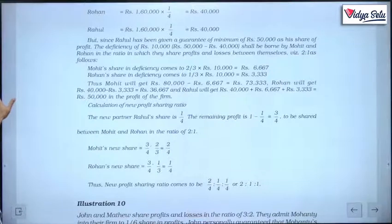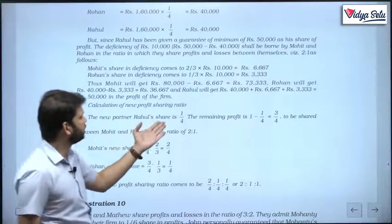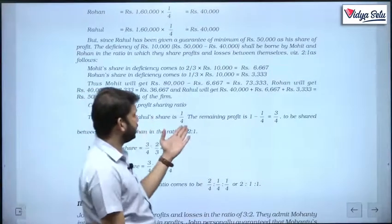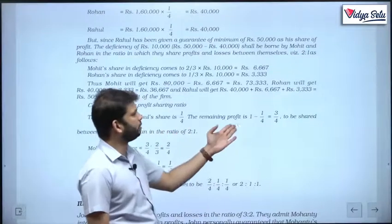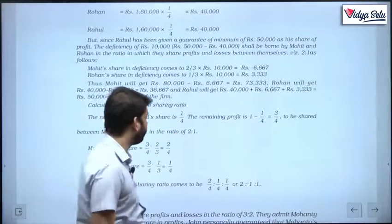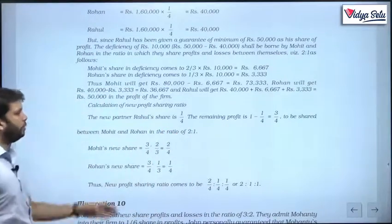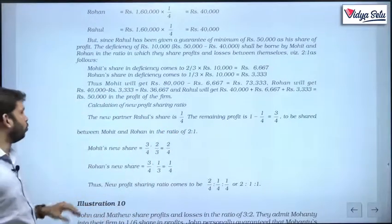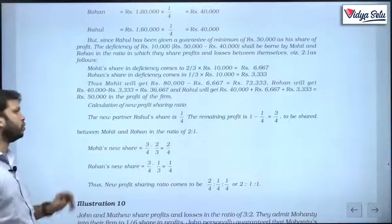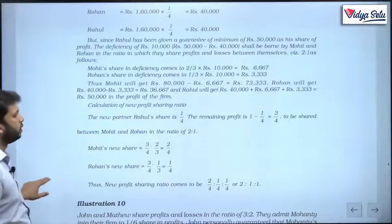As a working note on the calculation of the new profit sharing ratio: the new partner Rahul's share is 1/4, so the remaining is 3/4. This 3/4 will be divided in the old ratio of 2:1 between Mohit and Rohan.